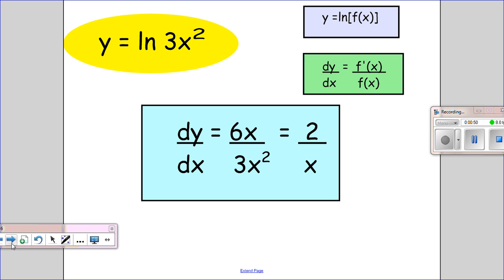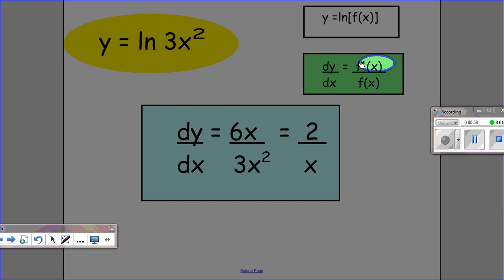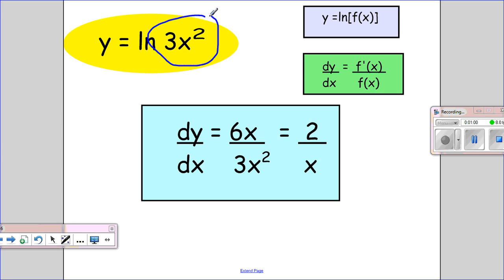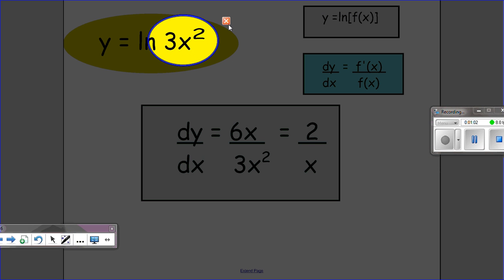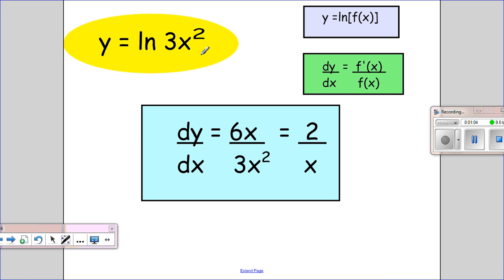So let's see if we can use that. If I've got y equals ln 3x squared, on the top when I differentiate I get the differential of f(x). So f(x) is 3x squared. When I differentiate 3x squared, multiply by the power, take 1 from the power, it's going to give me 6x.